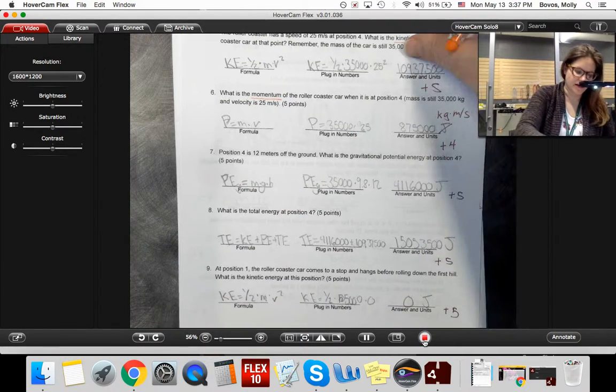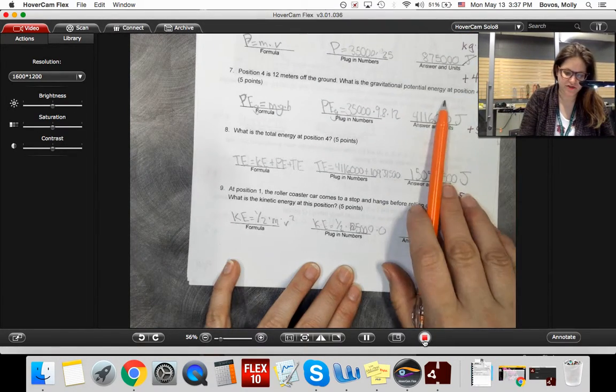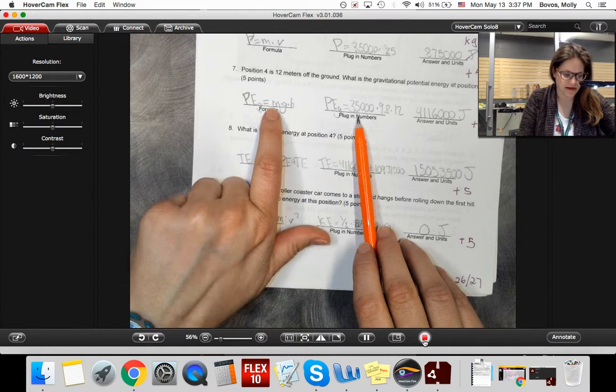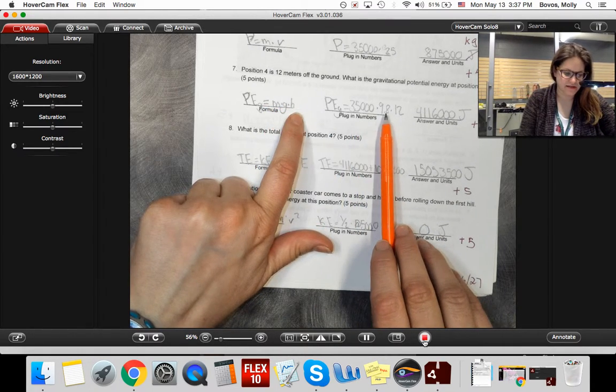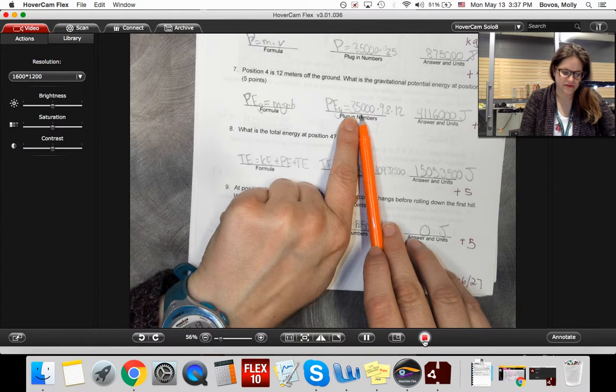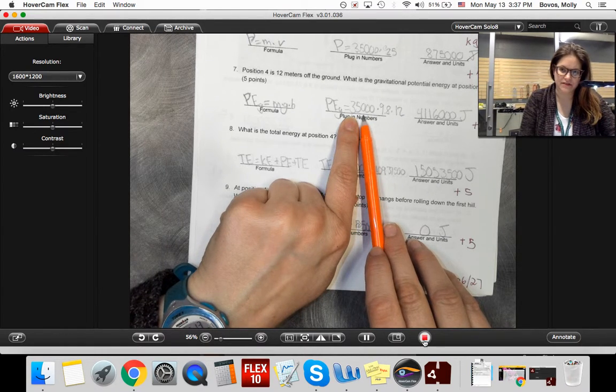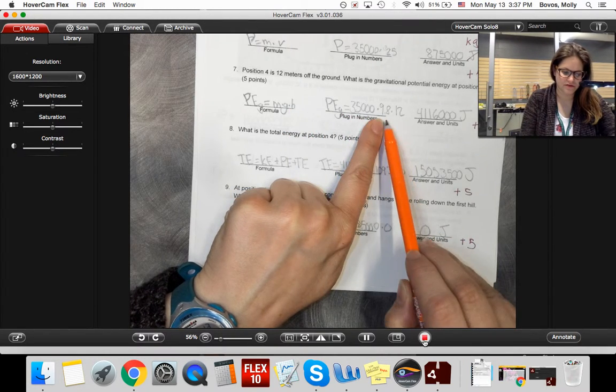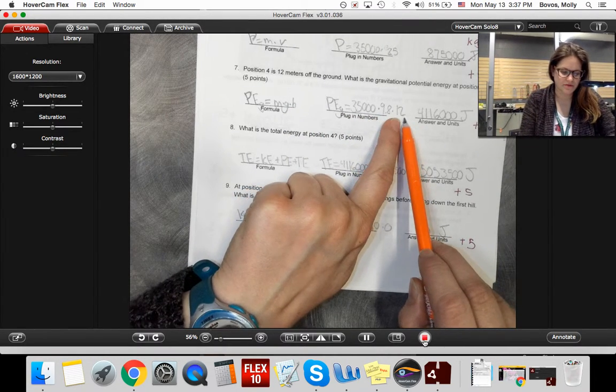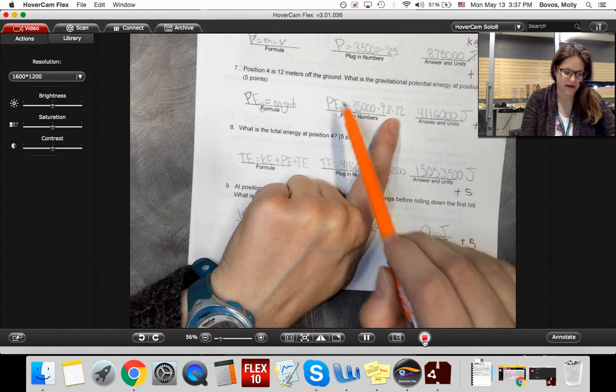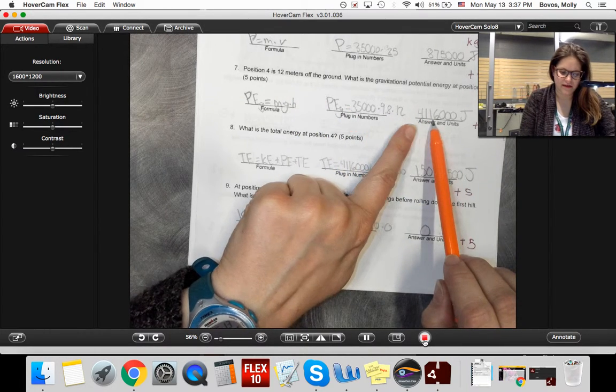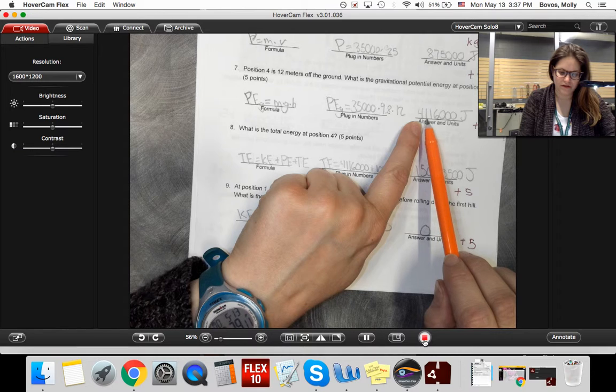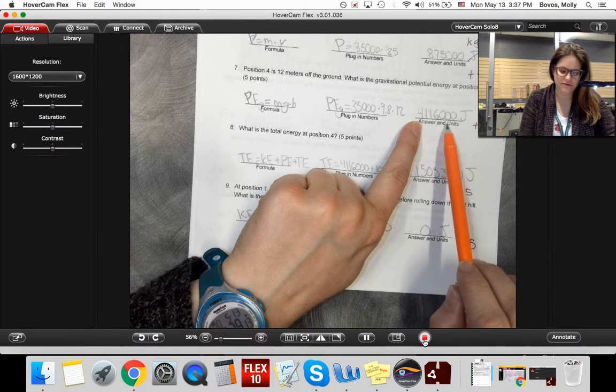Then you got to your gravitational potential energy. It's just mass times gravity times height. Mass is 35,000 kilograms times gravity, 9.8 meters per second squared, times 12 meters for the height. And that gets us 4,116,000 joules.